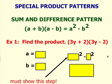This first pattern is called the sum and difference pattern. You'll notice that in the first binomial you have the sum right here, and in the second binomial you have a difference, so hence the name sum and difference pattern.